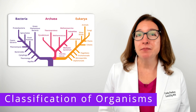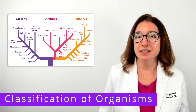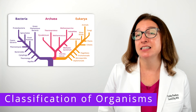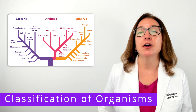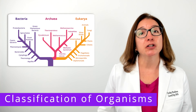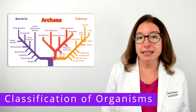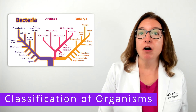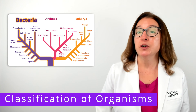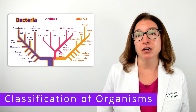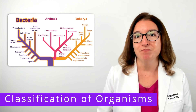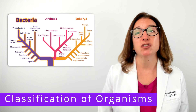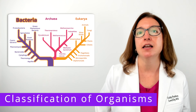The three-domain system is used to classify organisms based on their cells' RNA, cell membrane structure, and sensitivity to antibiotics. There are three main domains of life: bacteria, archaea, and eukarya. Organisms in the bacteria domain are all prokaryotes, which means their DNA is not enclosed in a nuclear membrane. In addition, their cell walls contain peptidoglycan, which is a structure made up of sugars and amino acids.